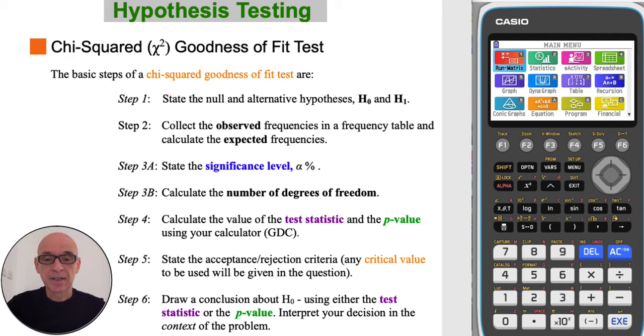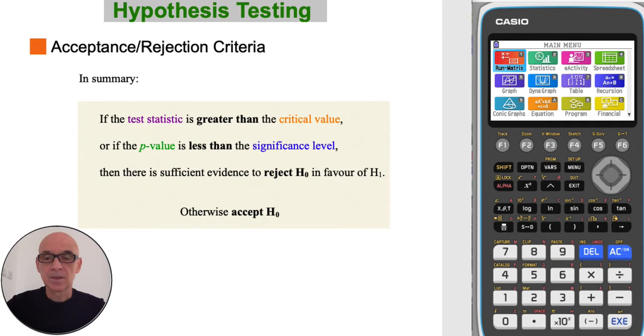Step 4, to calculate the value of the test statistic and the p-value. Step 5, to state the acceptance and rejection criteria. And Step 6, to draw a conclusion using either the test statistic or the p-value to remind you of the acceptance and rejection criteria.